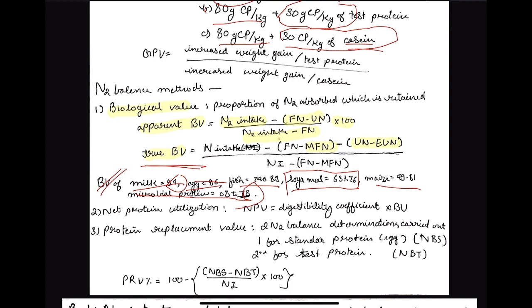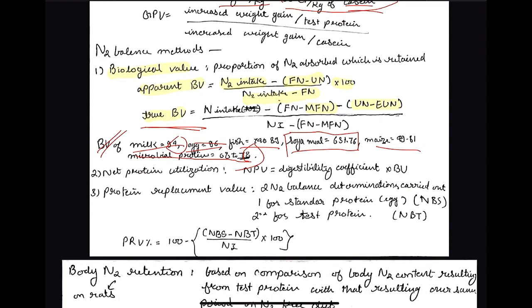The second method in the nitrogen balance category is Net Protein Utilization (NPU), which can be calculated by multiplying the digestibility coefficient by the biological value.